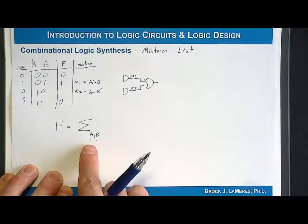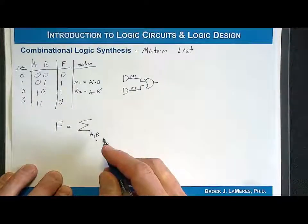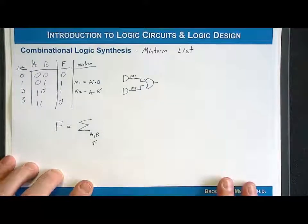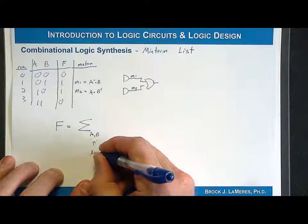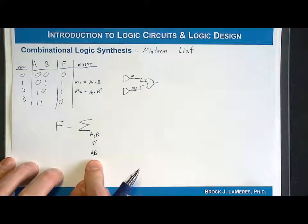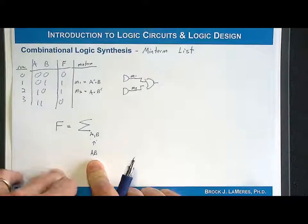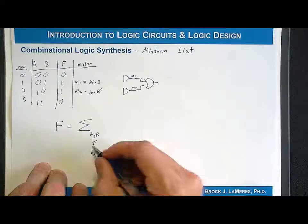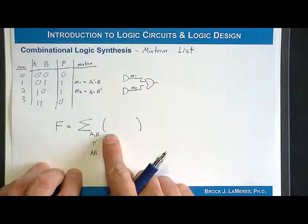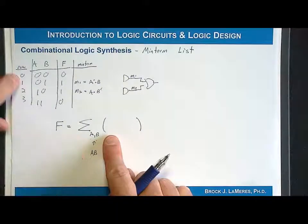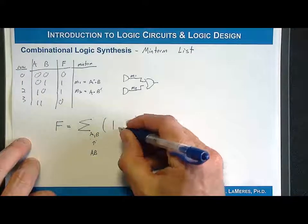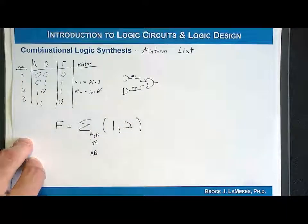Once we know A is on the left and B is on the right, it's very important to put that comma because in digital systems we have many different signals. If I just put AB, that could be a signal name by itself. Now we simply list the row numbers of every row in the truth table that has an output of 1. So we say 1, 2 and that is my minterm list.